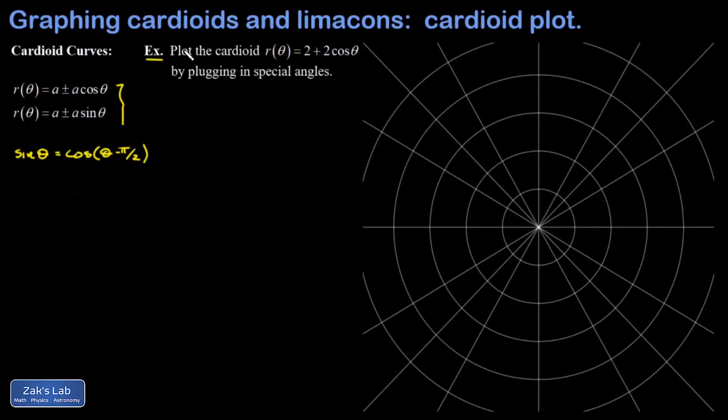In this example we're just going to plot a cosine cardioid point by point by plugging in special angles. I'm going to go through the first few at normal speed and then fast forward through the rest because it gets really tedious.